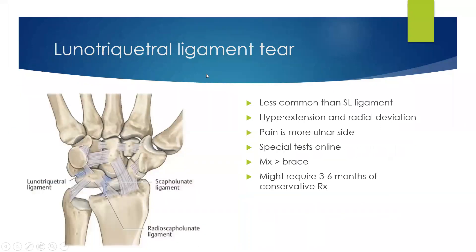The lunotriquetral ligament is less common than the scapholunate ligament. The mechanism is hyperextension and radial deviation on falling. The pain is slightly more on the ulnar side of the lunate. There are lots of special tests with fancy names. Management is basically bracing and rehab, bearing in mind that these types of wrist ligament injuries take three to six months of conservative treatment to recover — not a quick six-week ligament recovery.